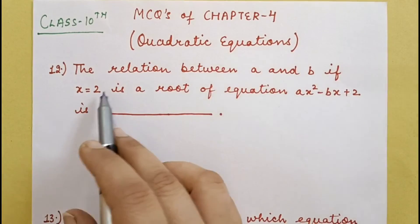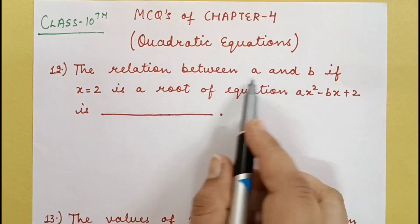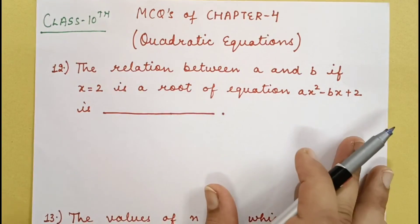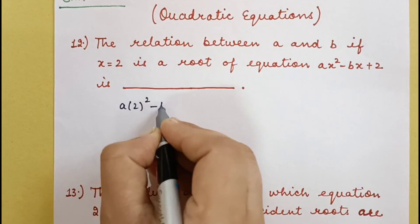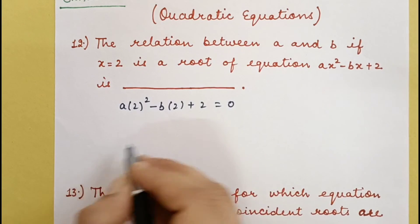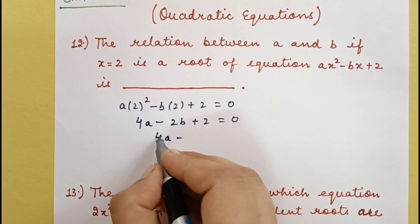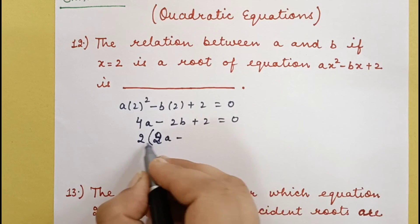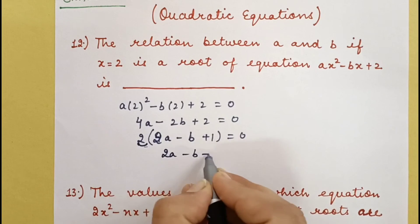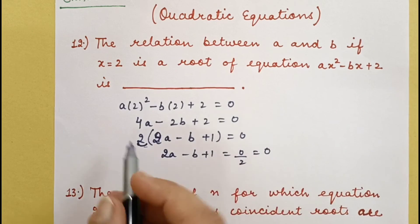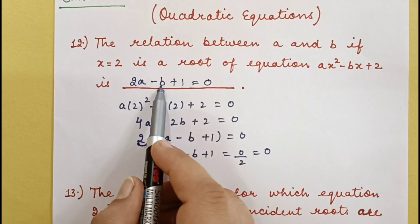Next question: Find the relation between a and b if x = 2 is a root of ax² − bx + 2 = 0. Since x = 2 is a root, it satisfies the equation. Put x = 2: 4a − 2b + 2 = 0. Take 2 common: 2(2a − b + 1) = 0, so 2a − b + 1 = 0. This is the relation between a and b.